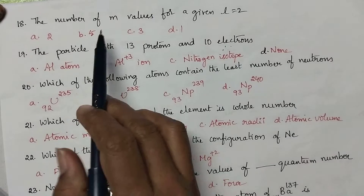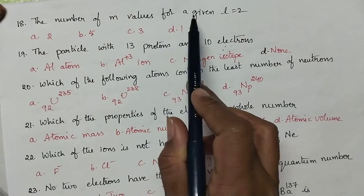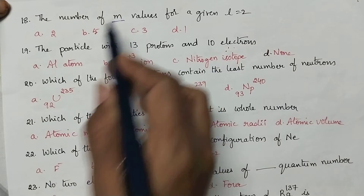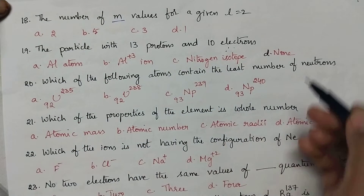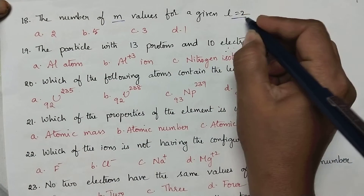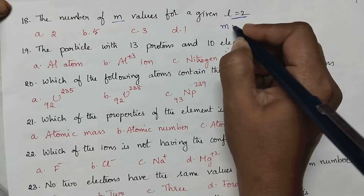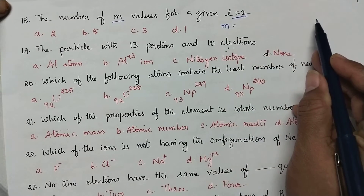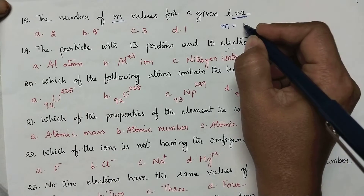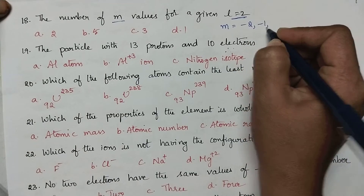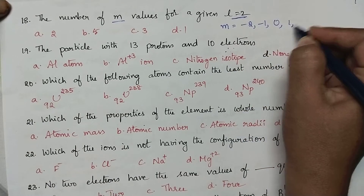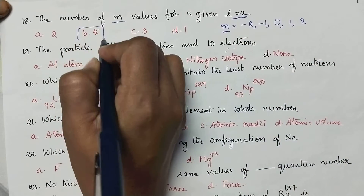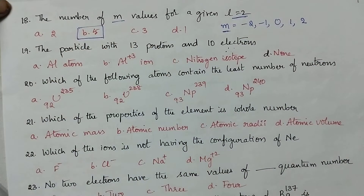The number of m values for a given l equal to 2: m values depend upon the l value. If l equal to 2, m will have values from minus l to plus l including 0. That means minus 2, minus 1, 0, 1 and 2. So m will have 5 values. Option B is the right answer.